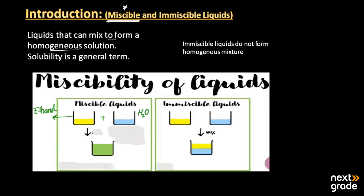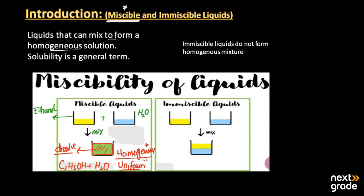When ethanol and water are mixed, we see that they form a homogeneous mixture — meaning these two liquids dissolve into each other. That homogeneous mixture has a uniform composition throughout. The dissolved ethanol, whose formula is C2H5OH, plus water forms this type of homogeneous and uniform solution. So these are known as miscible liquids.